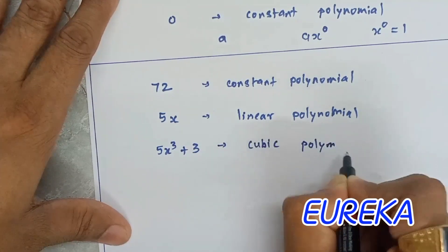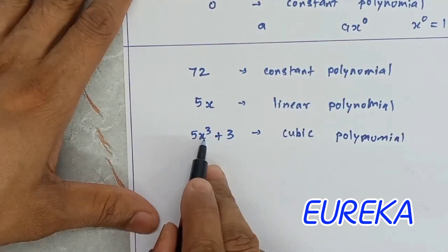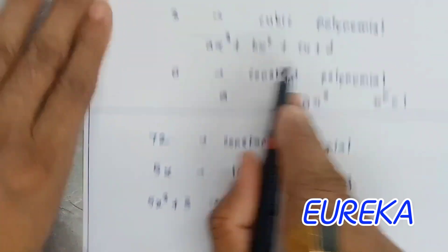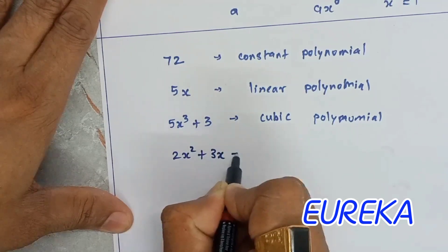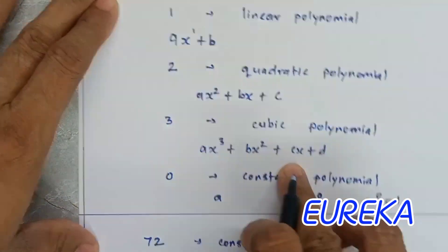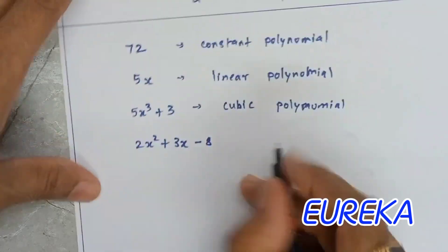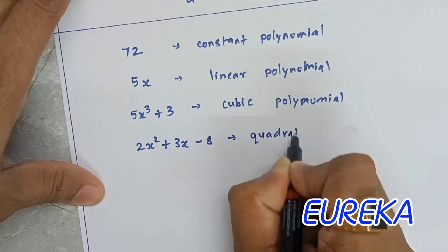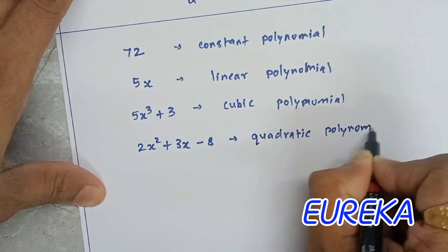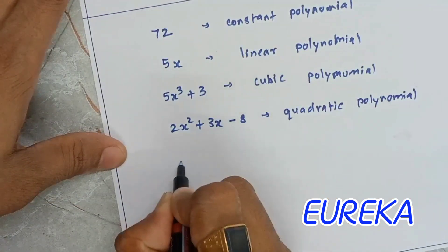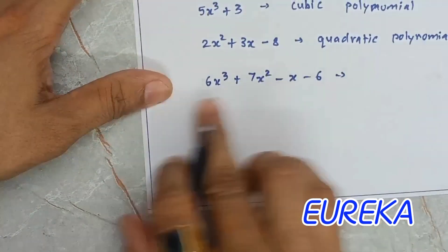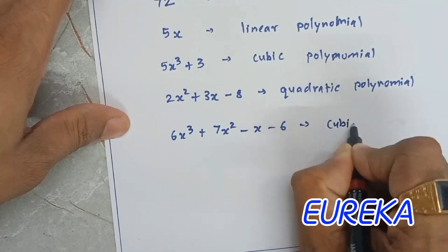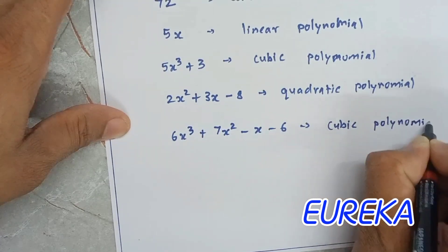The reason for 5x³+3 being a cubic polynomial is that the highest power is 3, and the degree has nothing to do with the number of terms — degree depends only on the highest power. Now if I give the example 2x squared plus 3x minus 8: the highest power is 2, so we call it a quadratic polynomial. Then 6x cubed plus 7x squared minus x minus 6: the highest power is 3, so it is a cubic polynomial.